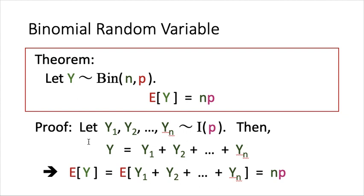We give a first proof here, which is the simplest I can think of. We define indicators Y1, Y2, Y3, up to Yn — each an indicator with parameter p. These indicators correspond to whether the first experiment is successful, whether the second is successful, and so on up to the last, where it equals 1 if successful.